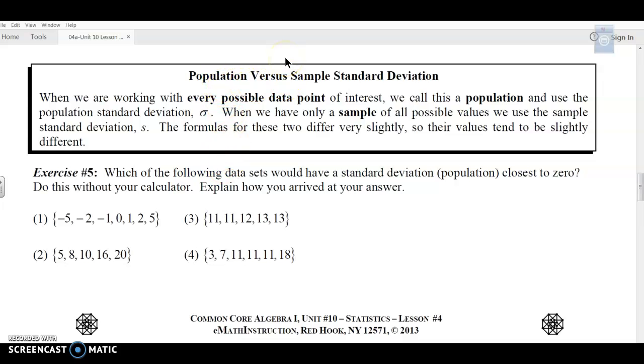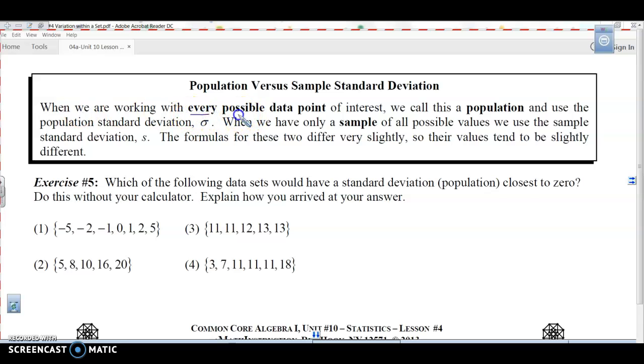Population versus sample standard deviation. When we are working with every possible data point of interest, we call this the population and use the population standard deviation σ, which is the loopy symbol. When we have only a sample of all possible values, we use the sample standard deviation, which is the S.